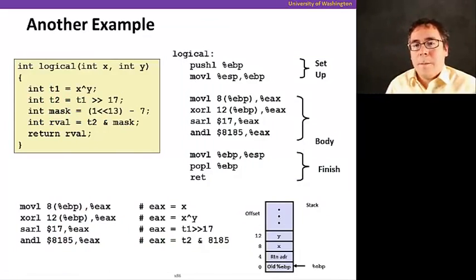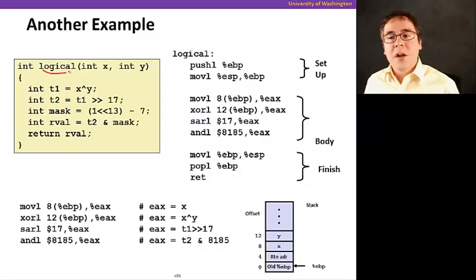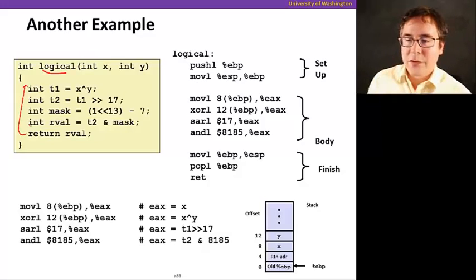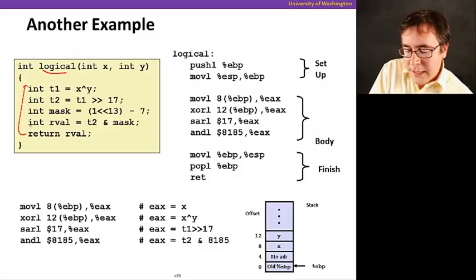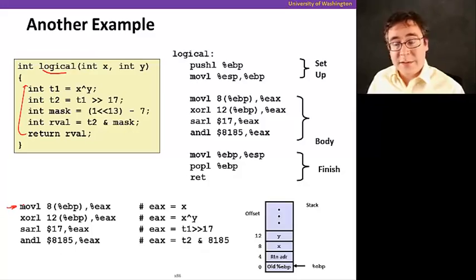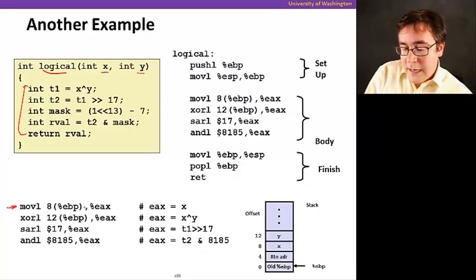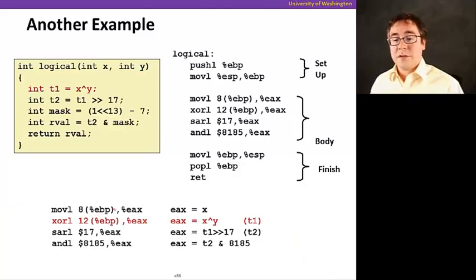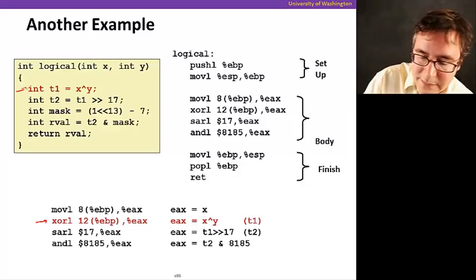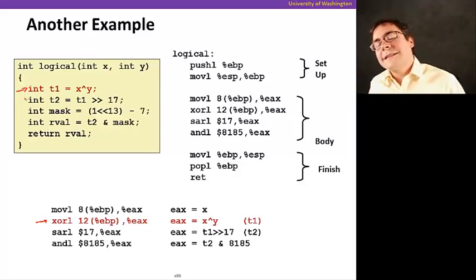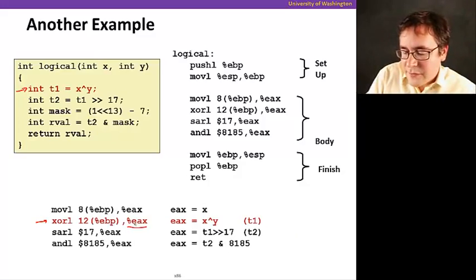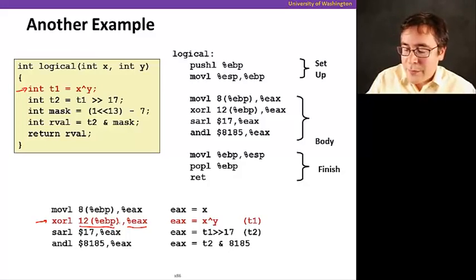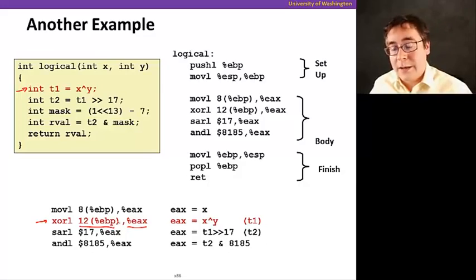So let me show you another example now. This example is implementing this logical function that evaluates all of these, that executes all of these expressions here. And, again, here, what this is like, like the previous example, we're just reading a parameter from the stack. Now this function has two parameters, x and y. This instruction is just loading the x parameter, which is 8 from EBP, into EAX. And let's see what the first instruction is doing now. This first instruction here, this XOR, is implementing this statement here. And look how interesting, this instruction is an interesting example, because it has a register operand, as well as a memory operand. And this memory operand happens to point to where y was located. So that's why this instruction implements x XOR y.